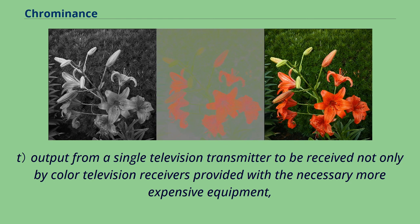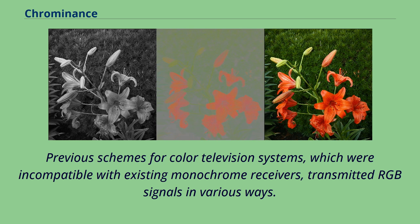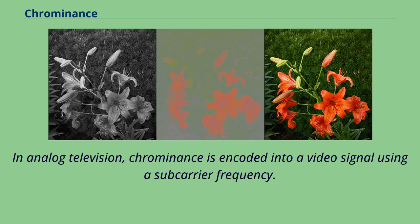The patent described output from a single television transmitter to be received not only by color television receivers provided with the necessary, more expensive equipment, but also by the ordinary type of television receiver which is more numerous and less expensive, and which reproduces the pictures in black and white only. Previous schemes for color television systems, which were incompatible with existing monochrome receivers, transmitted RGB signals in various ways.